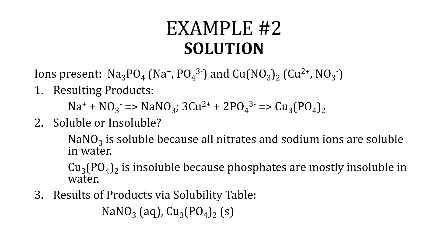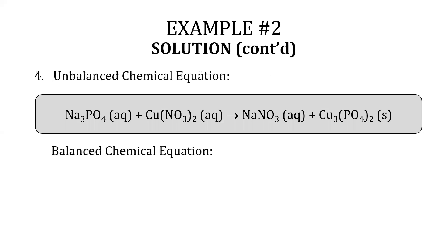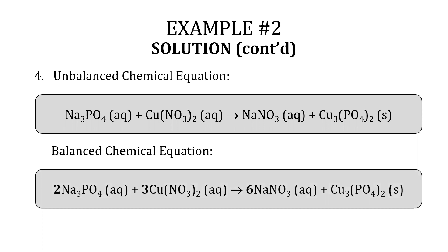The results via the solubility table show NaNO₃(aq) and Cu₃(PO₄)₂(s). The balanced chemical equation is: Na₃PO₄(aq) + Cu(NO₃)₂(aq) → 6 NaNO₃(aq) + Cu₃(PO₄)₂(s).